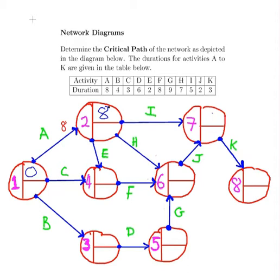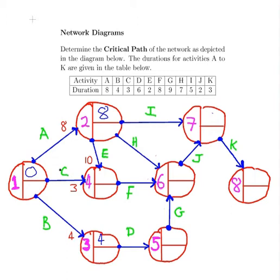For node three, all we have to do is make sure activity B is completed, so the earliest finish is time four. Activity C takes three time units, but for the earliest finish at node four, we also need E completed. E can only be completed once A is done, and E takes two time units, so the earliest E is finished is time ten. We pick the greater of the two paths — C with three, or A and E with ten — so that's ten.